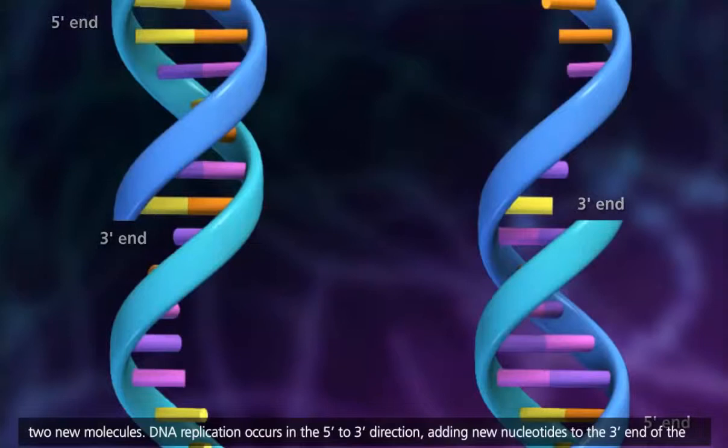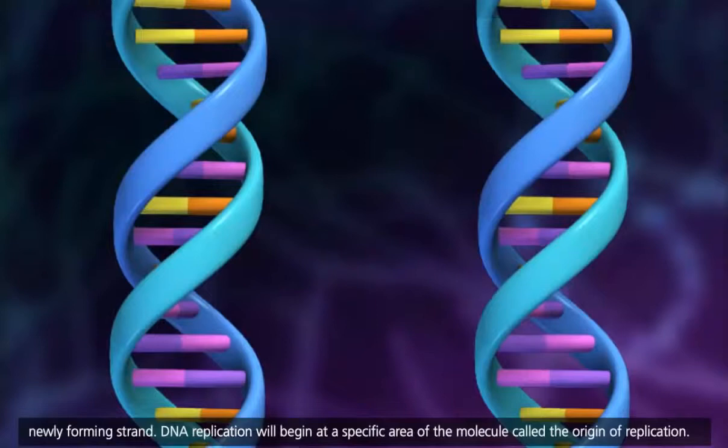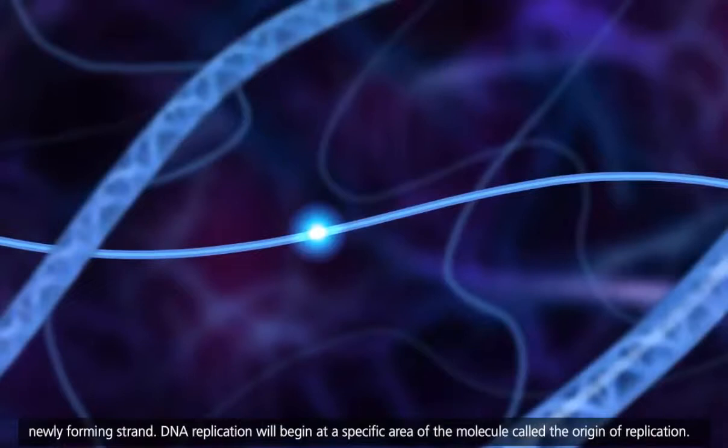DNA replication will begin at a specific area of the molecule called the origin of replication. The origin of replication denotes the area of active replication called the replication fork.